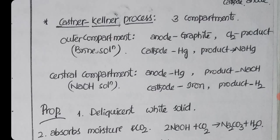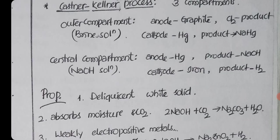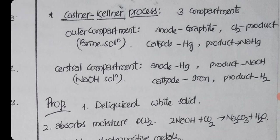Castner-Kellner process is also important. Here three compartments will be there. In the outer compartment, anode is graphite and cathode is mercury. Mercury flows at the bottom. At anode, chlorine gas is the product. At cathode, sodium amalgam is formed, NaHg. We are using brine solution, NaCl plus water. Chlorine is obtained at graphite anode.